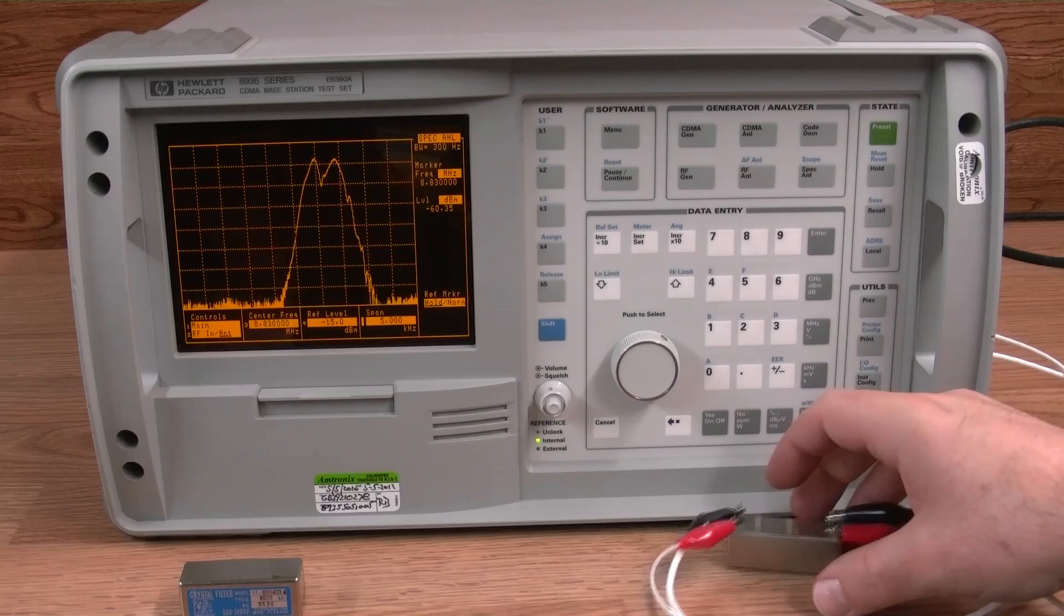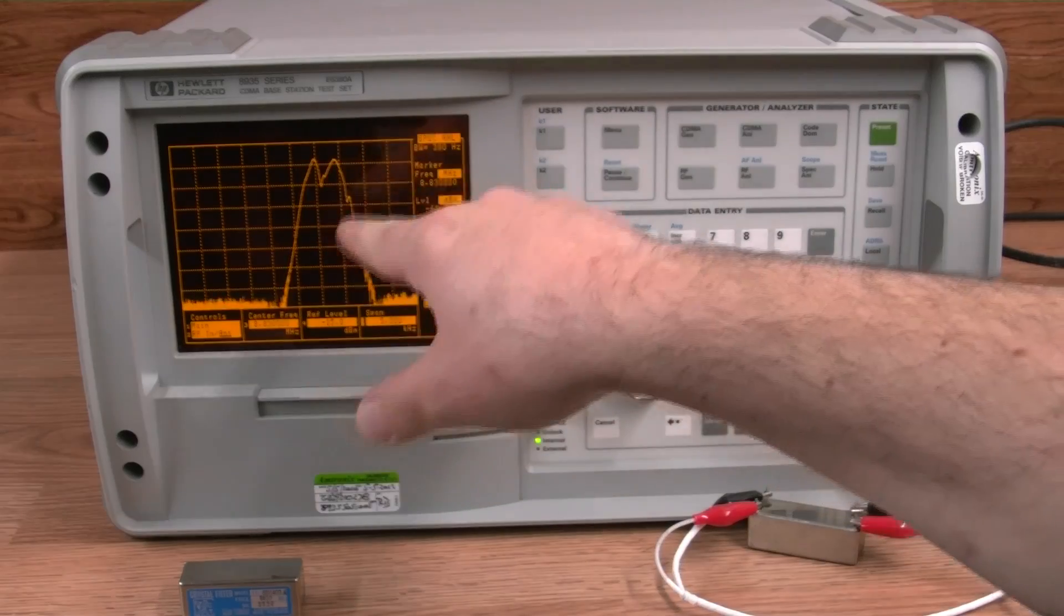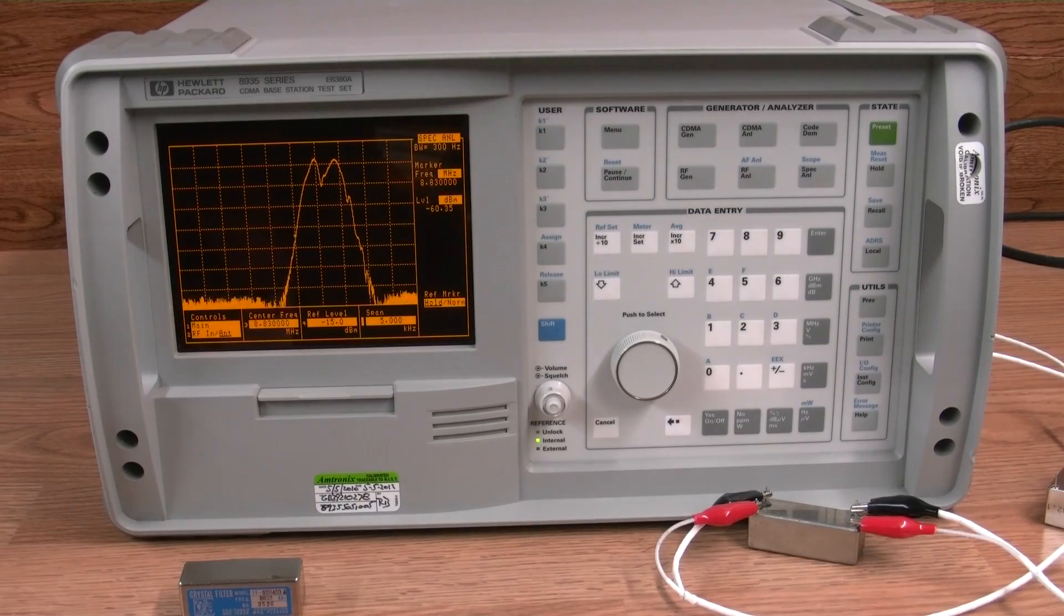So you can see we've got two lobes on this filter. These filters are getting to be 30, 35 years old, and the crystals as they age, they change frequency - the frequency that they resonate at - and sometimes they go up and sometimes they go down.